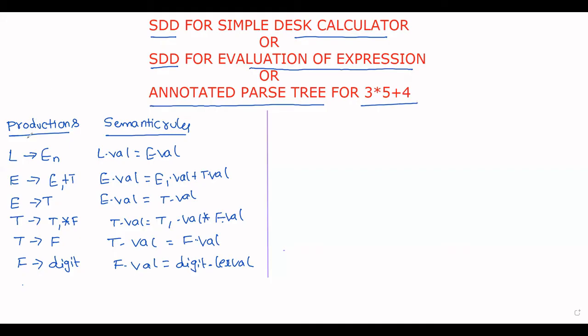For this example we are constructing the annotated parse tree. Each production and its corresponding semantic rules are given as input to the problem. What you have to construct is the annotated parse tree. The first step is to construct the parse tree for the given expression — we already know how to construct a parse tree.